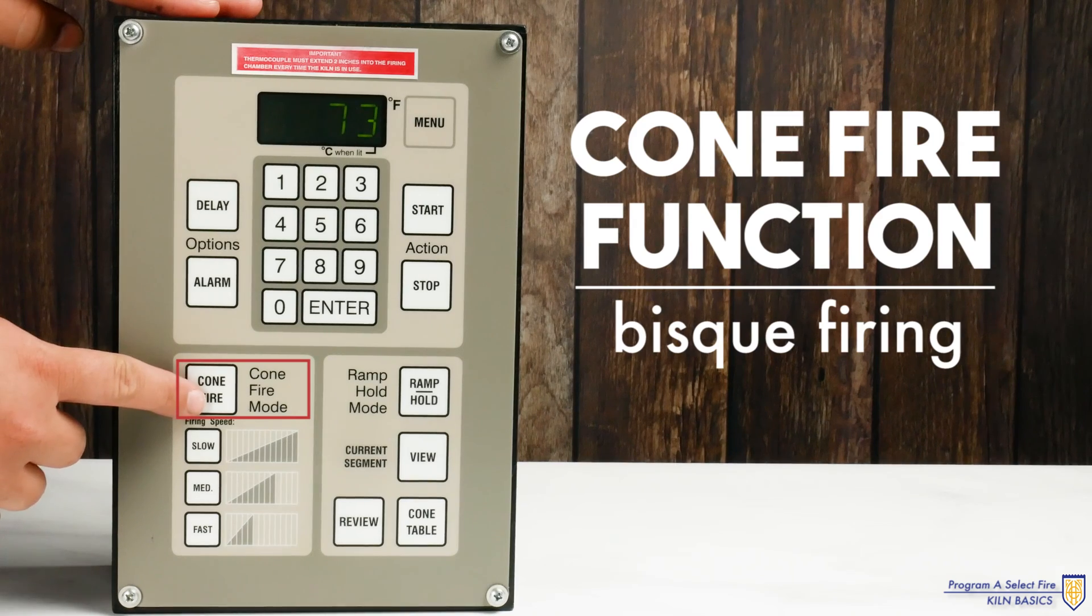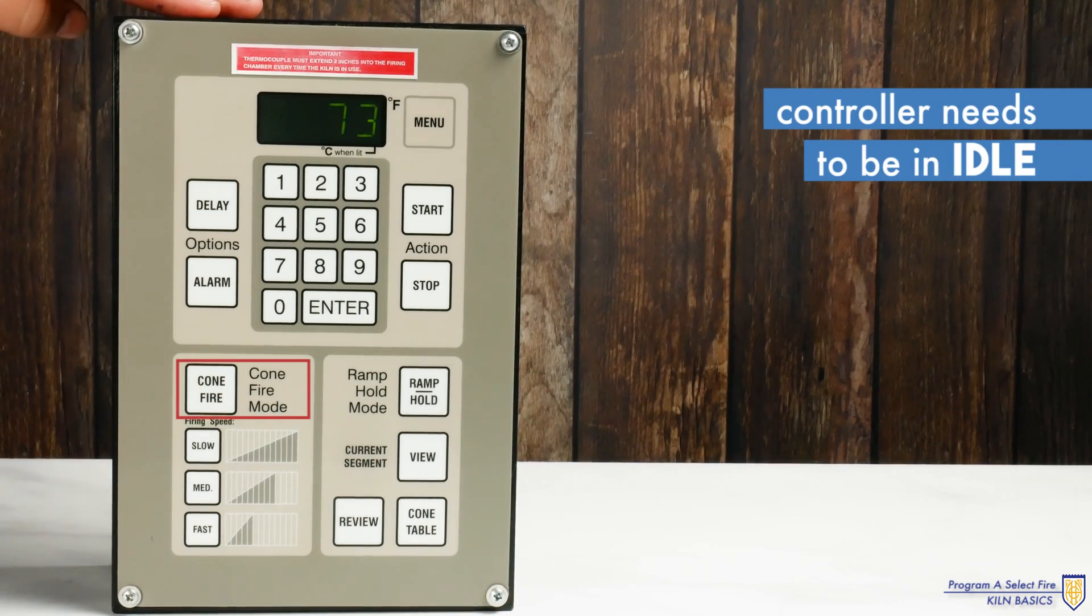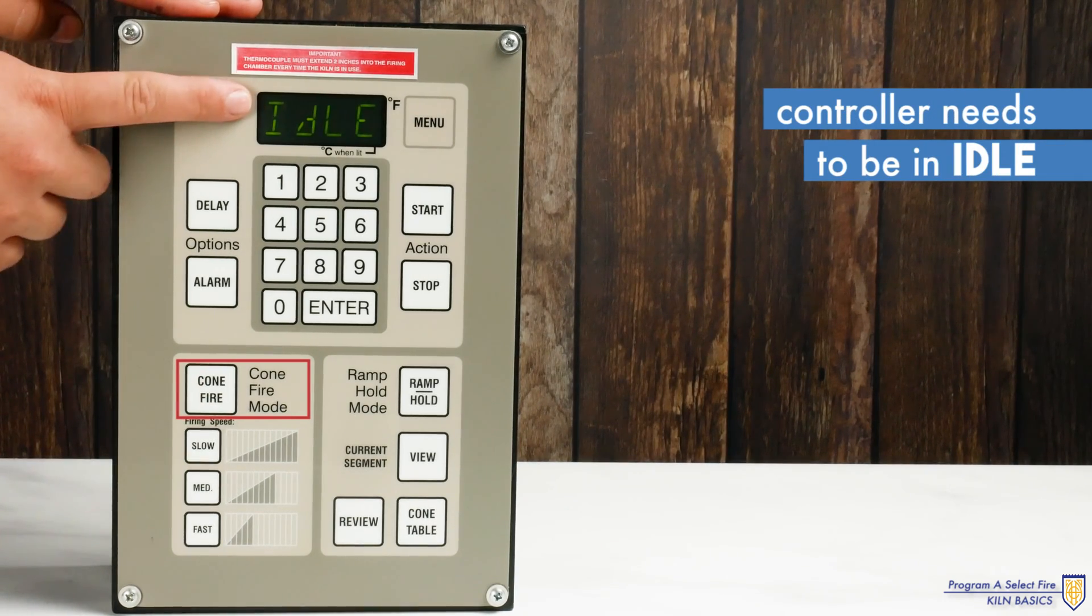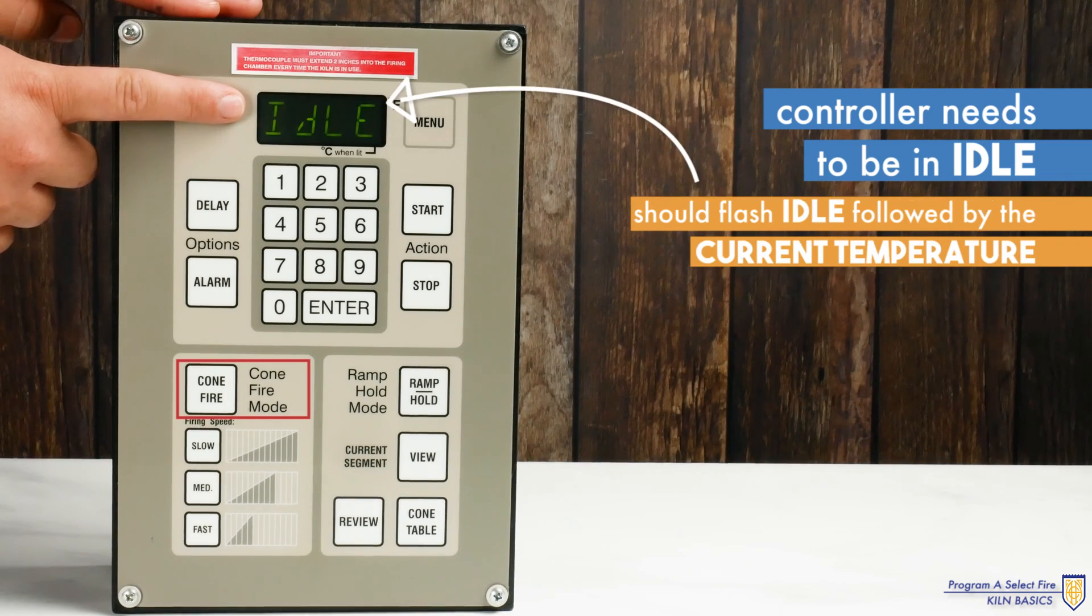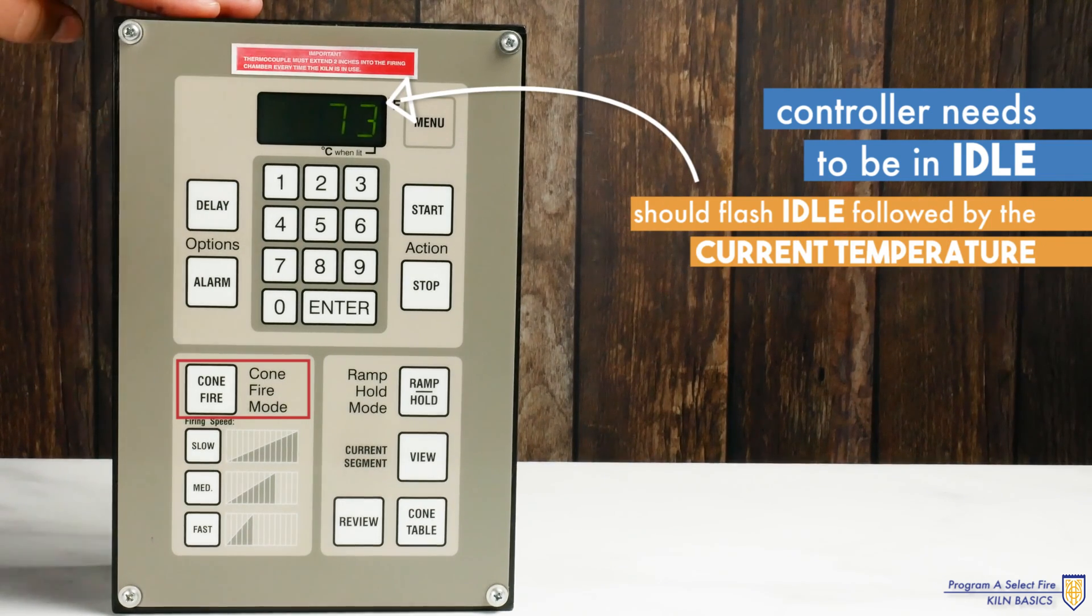We'll start with the cone fire function. The controller needs to be at idle. You may need to hit the stop button to get to the setting. It should flash idle followed by the current temperature.